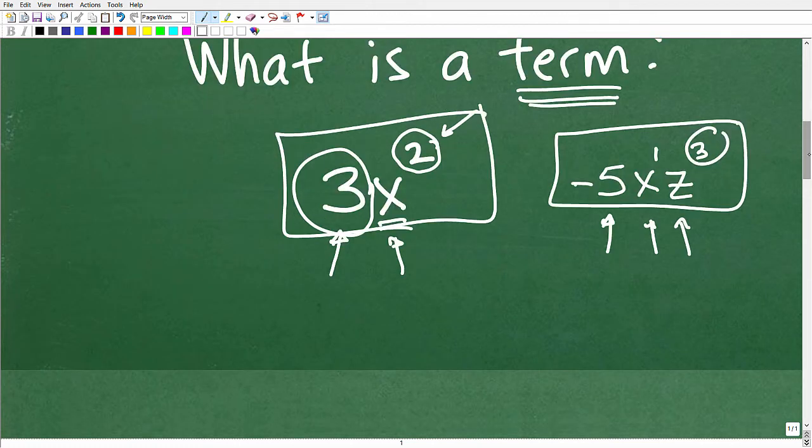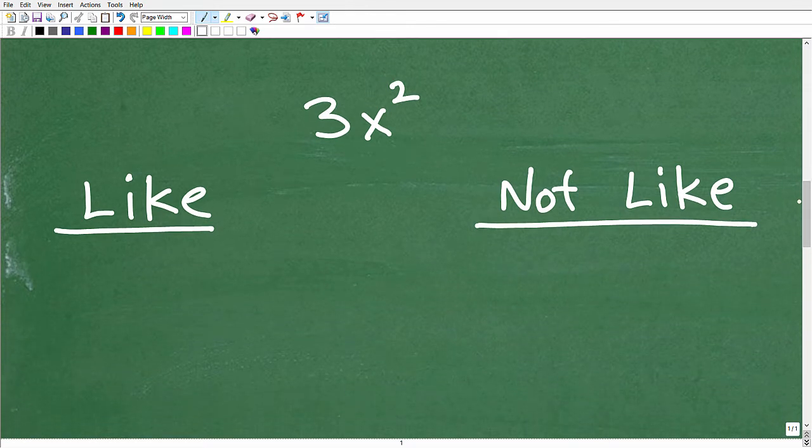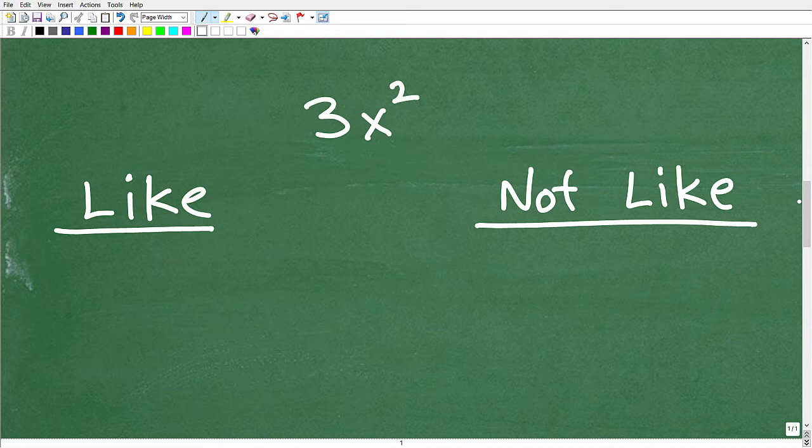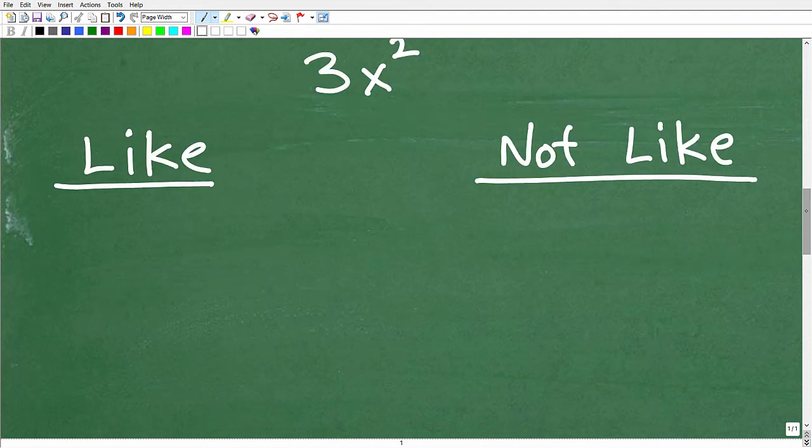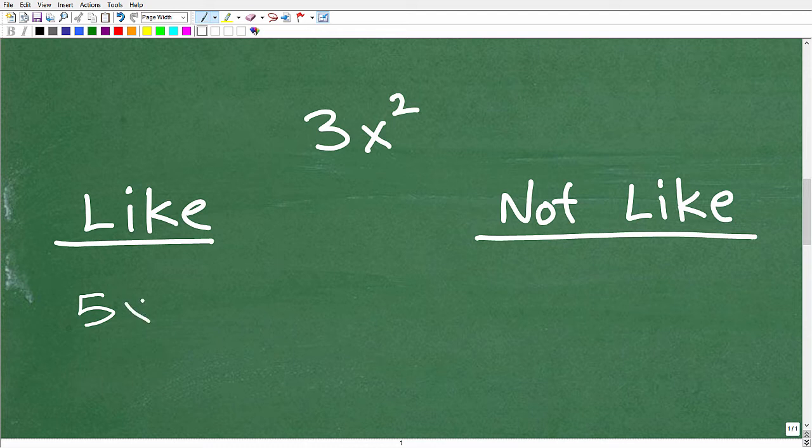So that's this whole idea of a term. And we need to understand that because when we start figuring out what are like terms, what are not like terms, we need to understand what a single term is. So now let's go ahead and take a look at this basic term, 3x squared. And let's understand what terms would be like to this term and what would not be like.